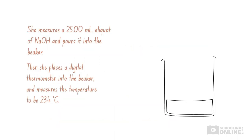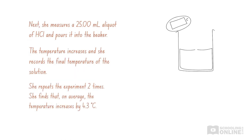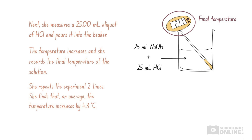She measures a 25 millilitre aliquot of sodium hydroxide and pours it into the beaker. Then she places a digital thermometer into the beaker and measures the temperature to be 23.4 degrees Celsius. Next, she measures a 25 millilitre aliquot of hydrochloric acid and pours it into the beaker. The temperature increases and she records the final temperature of the solution. She repeats the experiment two times.